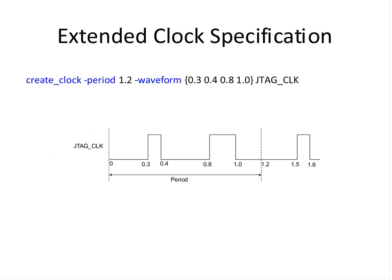Many times test clocks are slower and not at 50 percent duty cycle — they can have waveforms where the clock rises and falls twice within a period. For example, a comparatively complex clock with period 1.2 that rises and falls twice within that period but repeats periodically after 1.2 — test clocks can be like this. To define such a complex clock, first you tell the period, then specify the waveform: rise at 0.3, fall at 0.4, again rise at 0.8, fall at 1, and it repeats in a period of 1.2. This is the way you define the complete specification using the waveform switch.